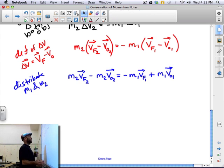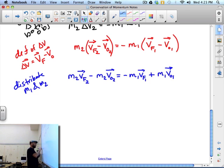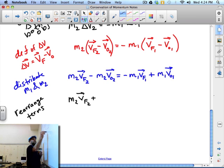Let's rearrange things so they look cute. So I'll just call this rearrange terms. I'm going to make it m2 v final object 2, plus, if I add this to both sides of the equation, I'll have m1 v final object 1,